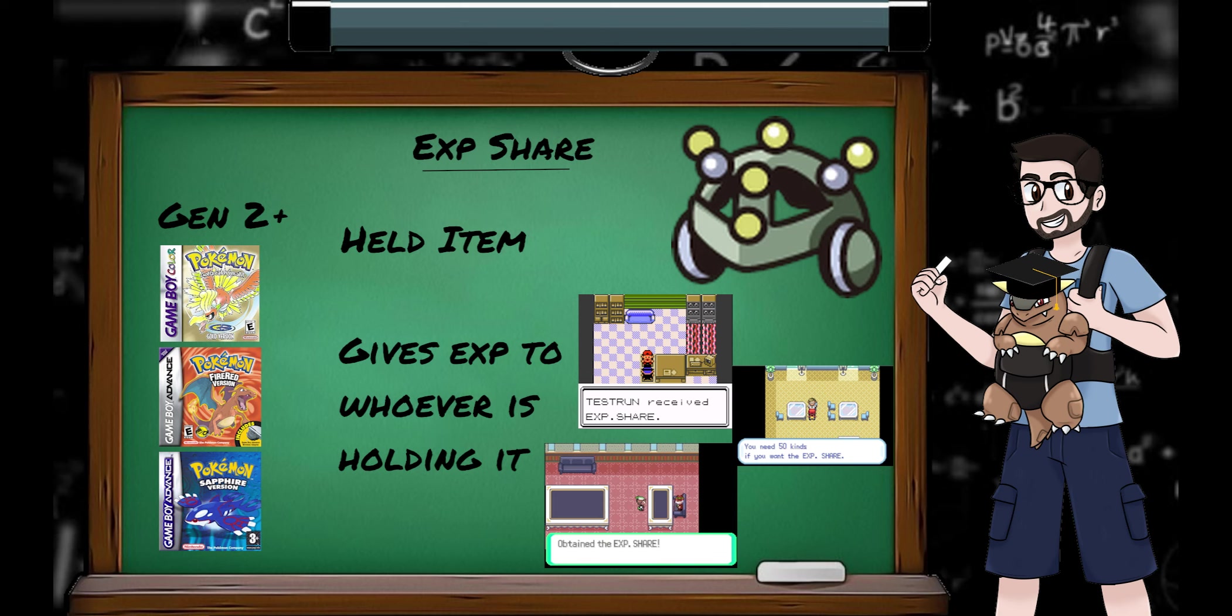If XP sharing items are in play, Pokemon get their battle experience calculated twice. Once for those that participated, and once for those affected by an XP share. So if an XP share holding Pokemon contributes to a battle, they'll receive two separately calculated lots of experience.